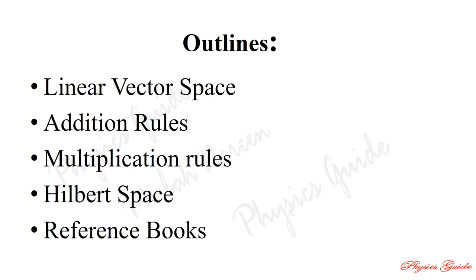In this lecture we first discuss what a linear vector space is — what is a space, what is a group in mathematics and quantum mechanics, and what is an abelian group. A linear vector space is a set of two types of elements.